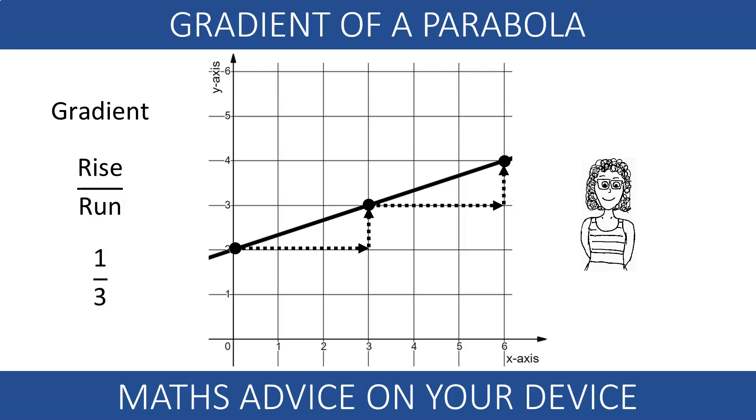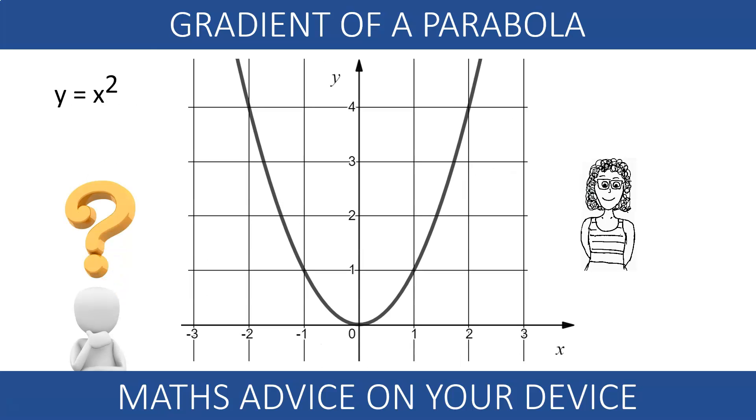A straight line has a constant gradient. But what about the gradient of a parabola? It changes at each point, but gradually.